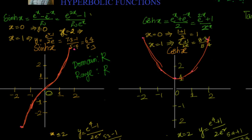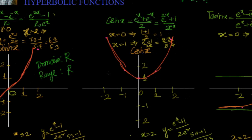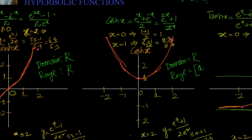For hyperbolic cosine, the domain is ℝ — I can give all values and the function goes to infinity in both directions. But the range is interesting: y is never less than 1. The range is [1, ∞), with square brackets indicating inclusive of 1, and excluding infinity. You can see that there are no y values below 1.